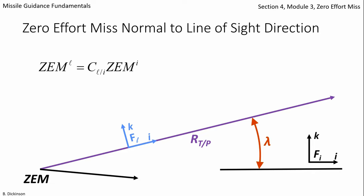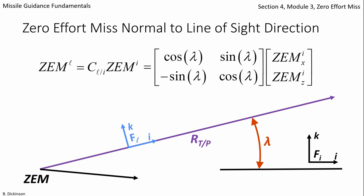And then we want to get that component of the zero effort miss from the inertial frame into the line of sight frame. So we can do this with a simple direction cosine matrix that depends on the line of sight angle.